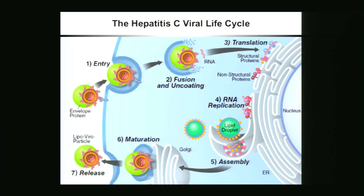HCV replication cycle is pretty typical for a positive-strand RNA virus: it starts with entry, fusion, and uncoating, then translation of the viral proteins followed by viral RNA replication using membranous webs, and then the later steps of assembly, maturation, and release. One specificity of HCV, though, is that it localizes to and utilizes cellular lipid droplets.